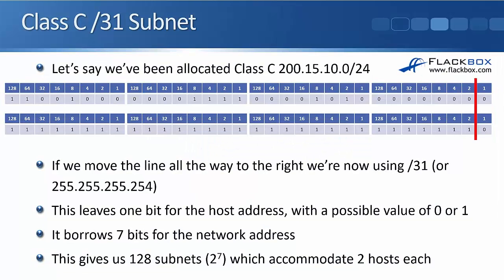Moving on, let's say that we've been allocated class C 200.15.10.0/24, the same as the last example. And here we're going to move the line all the way to the right — we're going to go with a slash 31. Obviously we can't do a slash 32 if we want to have more than one available host. You can use a slash 32 subnet mask, but there's only one host there. That's mostly used for loopback addresses. So if you do need to have multiple hosts, the furthest right you can go is a slash 31.